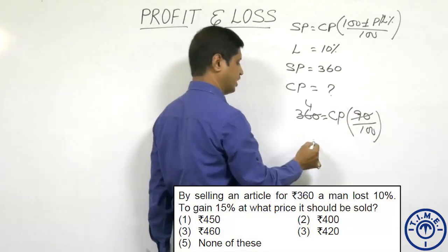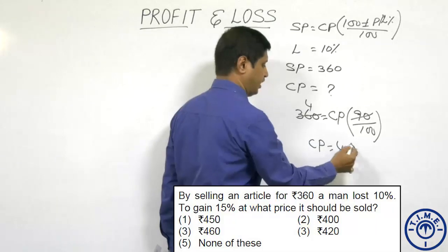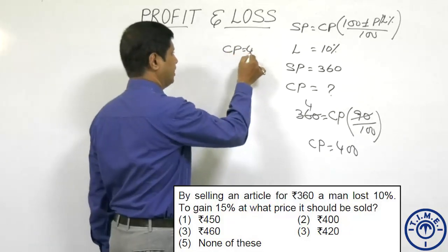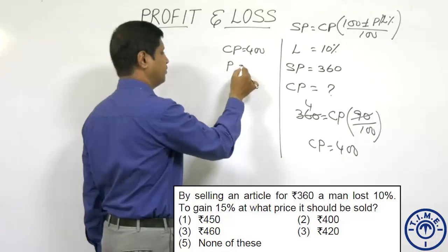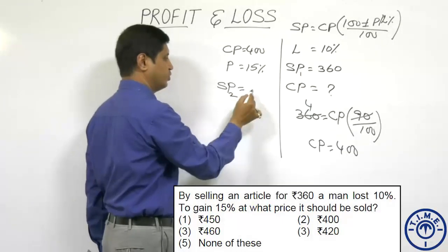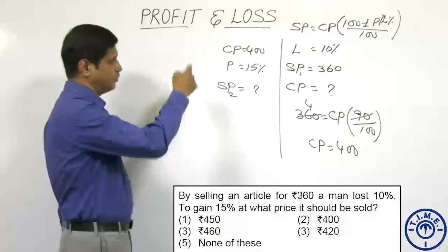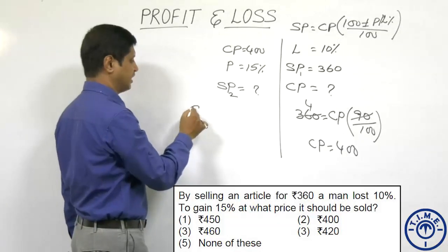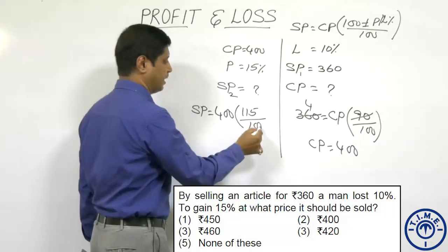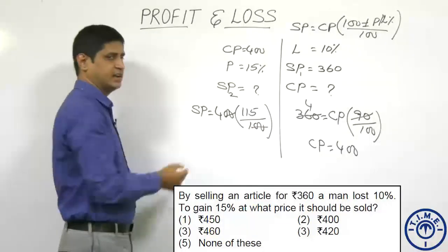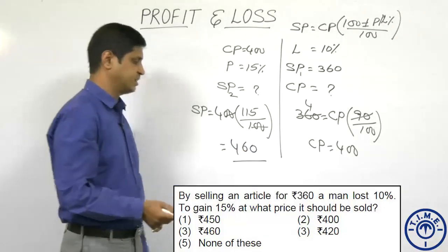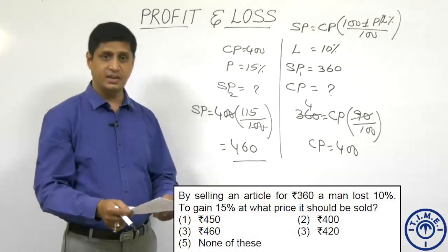90 goes exactly 4 times, so the cost of the article is ₹400. Now the cost price is ₹400 and he wants to make a profit of 15 percent. The selling price is equal to 400 × 115/100. Cancelling zeros, the product of 4 and 115 is 460. So the selling price is ₹460, and the right answer is option 3.